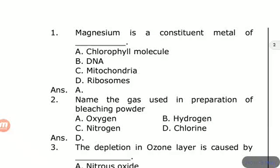Magnesium is the answer. Similarly, in hemoglobin, the metal present is iron.